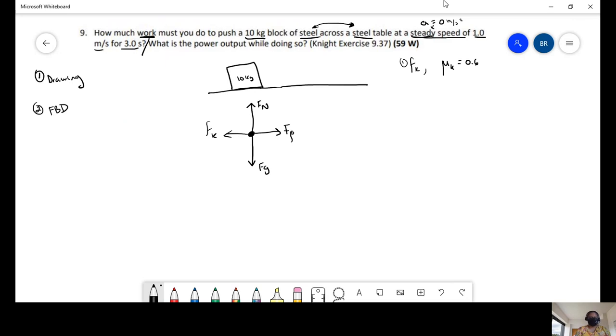In order to find work, I'm going to use this definition of work. Work equals the dot product of the vector F times the displacement vector, or the magnitude of the force times the magnitude of the distance times cosine of the angle.